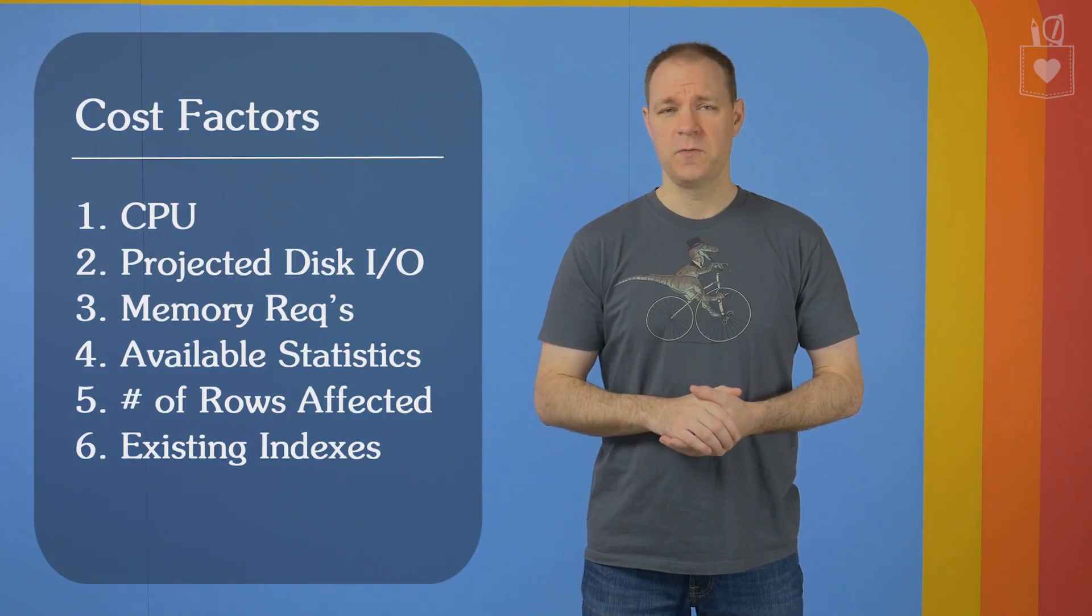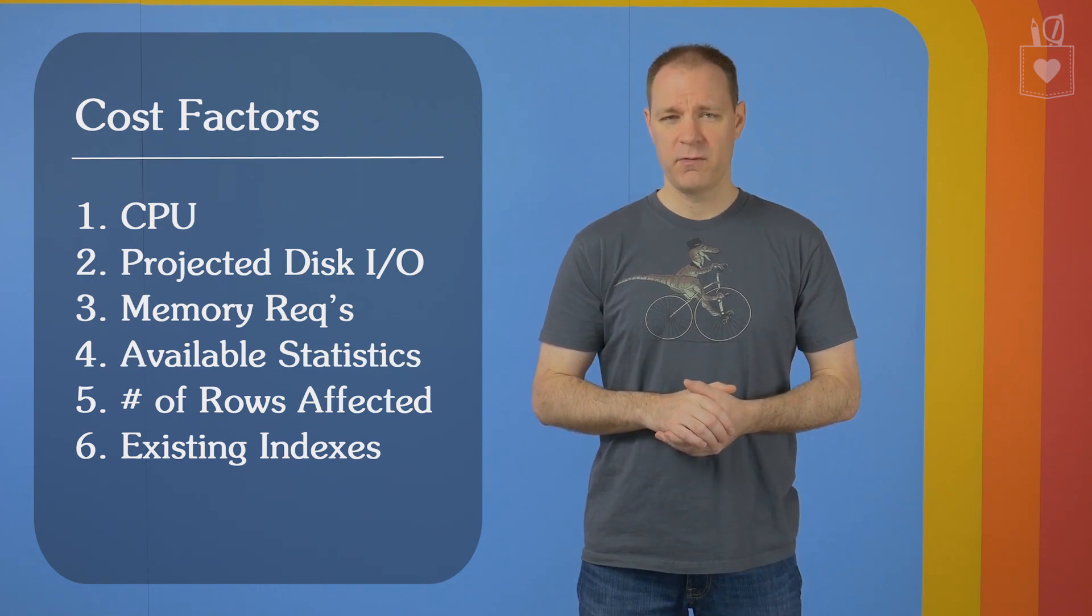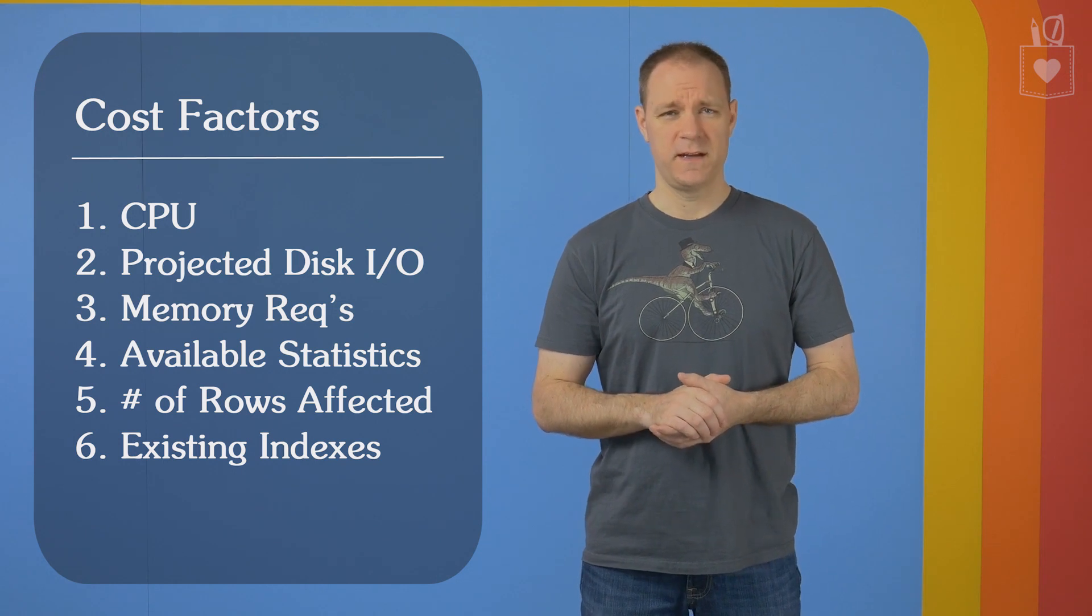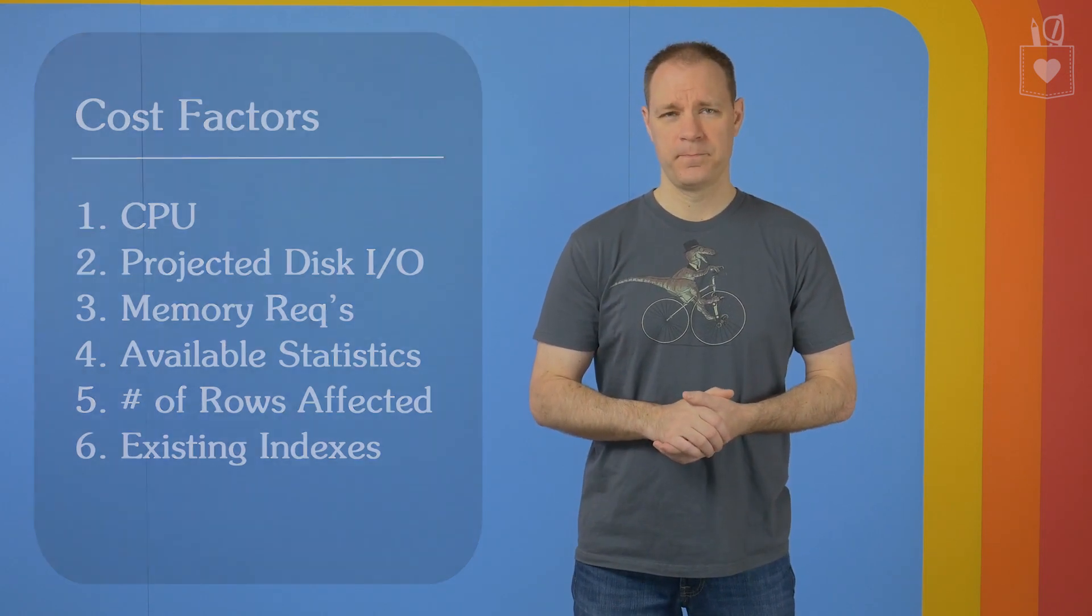But if we're talking about a cost-based optimizer, something that is concerned about making queries inexpensive, what makes up the price tag on that query? Well, it's made up of six different factors: CPU, projected disk IO, memory requirements, statistics, the number of rows affected, and the indexes that are available. All of these numbers are put together in a way that we don't get to see to come up with a cost number. If after a pass through the optimization process, that cost number is low enough relative to the amount of time that the optimizer took to put that plan together, then it'll be happy and ship it off to be executed. If it's not, it will undergo another round of optimization and more complex rules will be applied in order to make that plan less expensive.